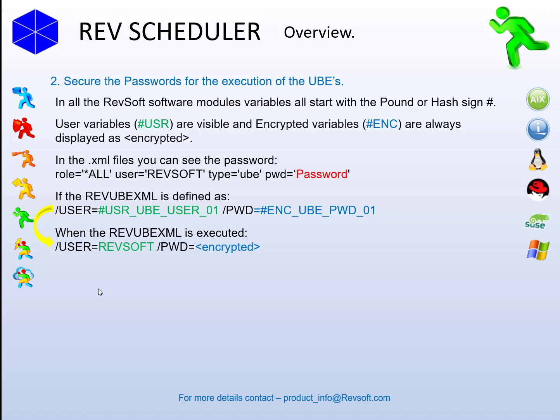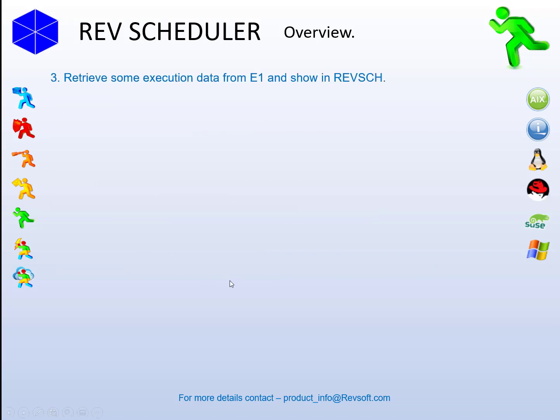Since it would take Oracle a long while to fix up the XML files with the exposed variables, we decided to add the delete argument in the RevUBEXML command. If it's set to white, it will delete all the XML files for the current UBE process — primary, secondary, and output XML files — where you will find the password is exposed in them all.